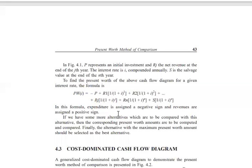If P represents the initial investment, then Rj is the net revenue at the end of the jth year. The interest rate is i, compounded annually. The salvage value S is taken at the nth year, while the net revenue is considered at the end of the jth year.